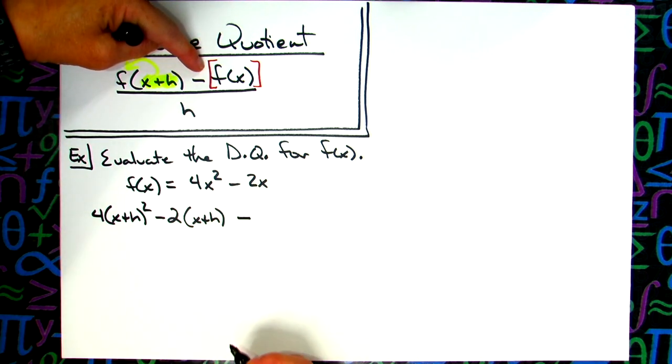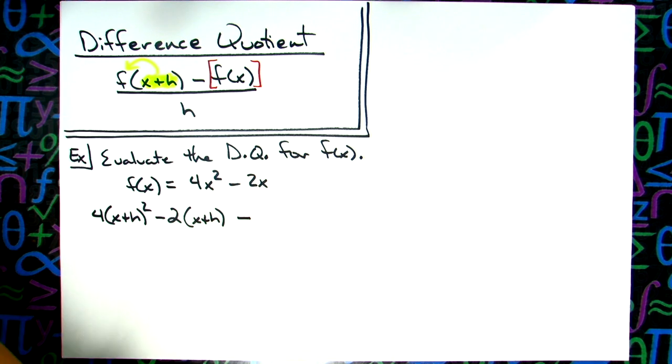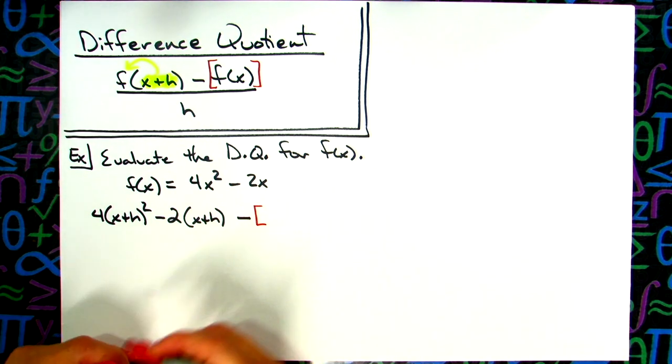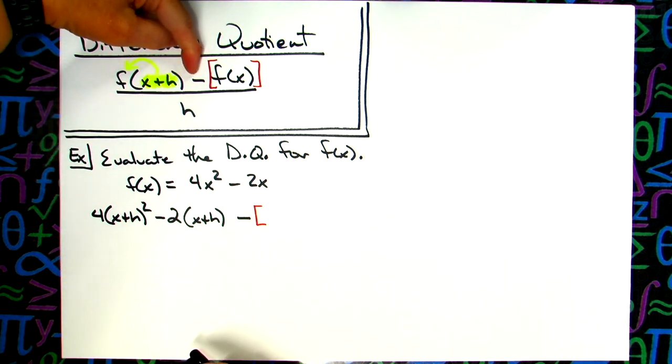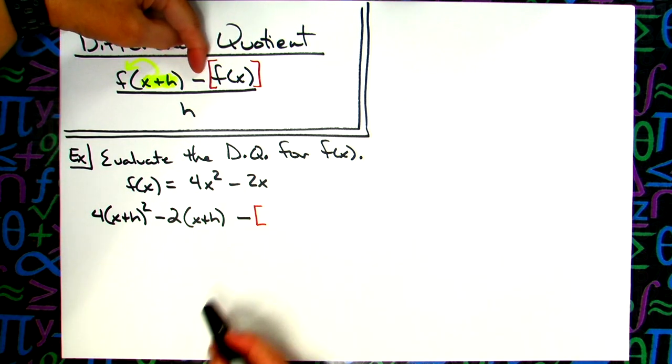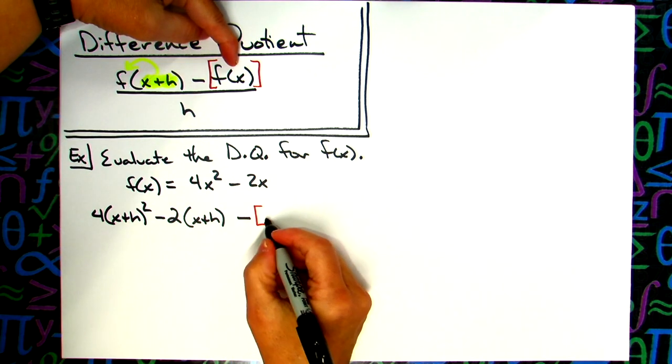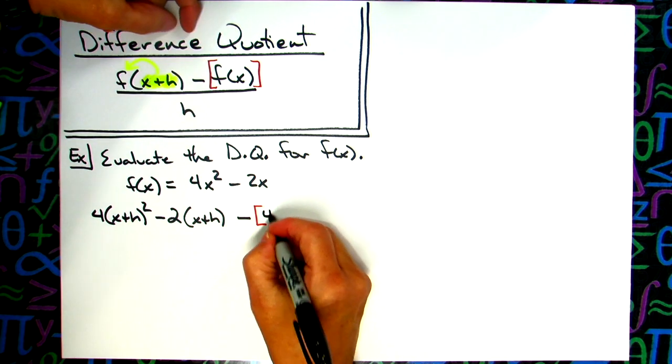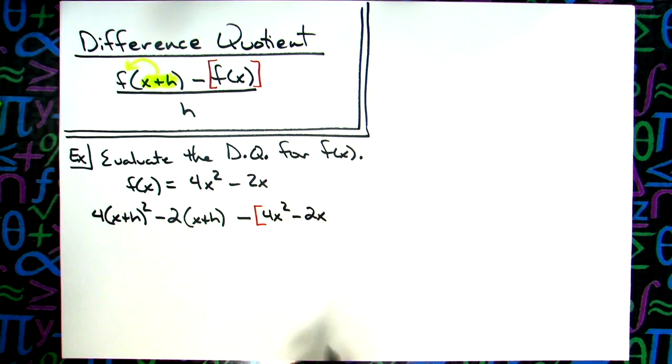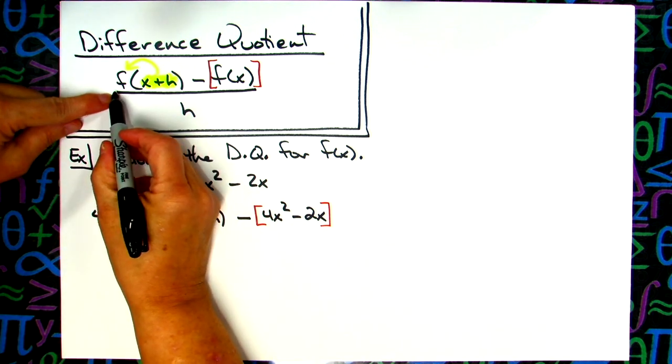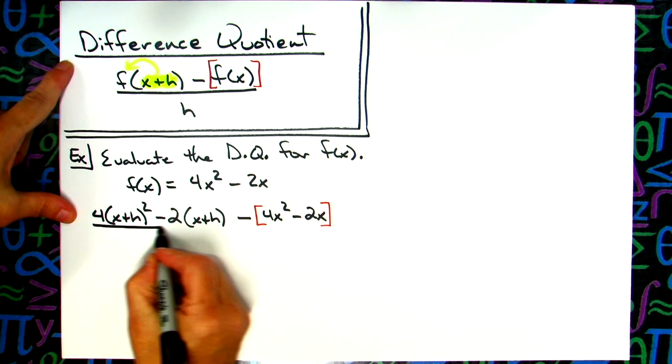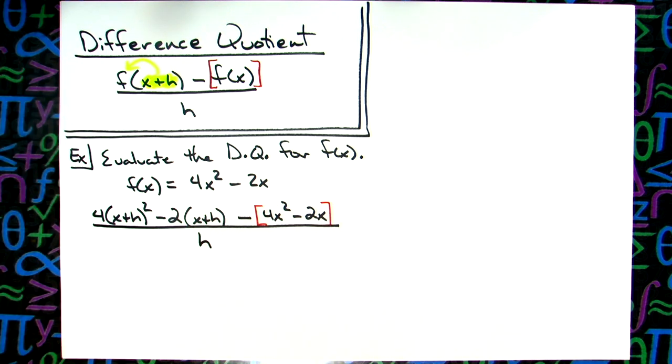Now I'm going to do each individual part of this difference quotient at a time. Initially I'm going to look right here. It says to take x plus h and put it in that f function. So I'm going to plug it in in two locations. I'm going to have a 4, replacing it here, x plus h to the second power. Then I'm going to do the minus 2, plug that into the function again, x plus h. All over h.